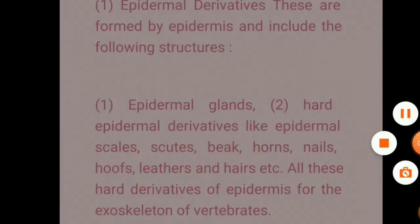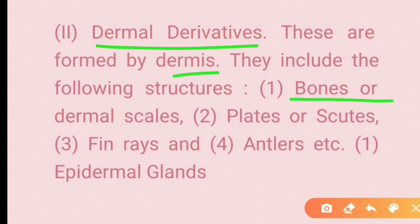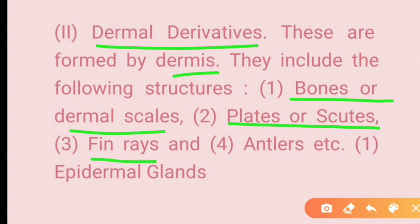The second type is dermal derivatives, which come from the dermis. These include bones, dermal scales, plates and scutes, fin rays, and antlers.